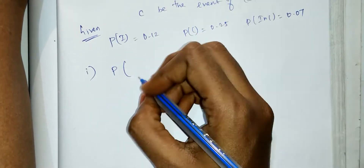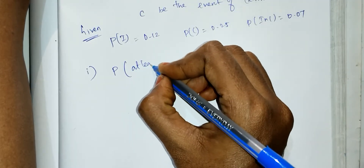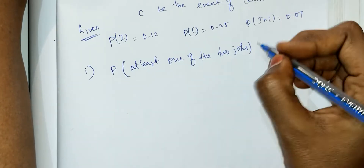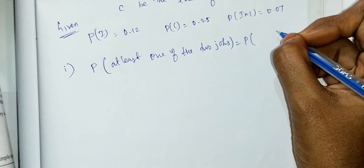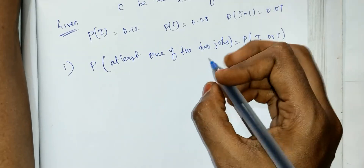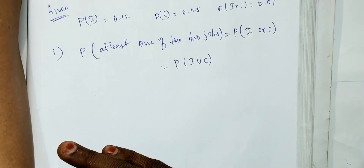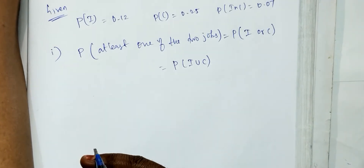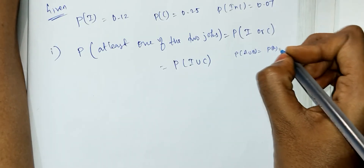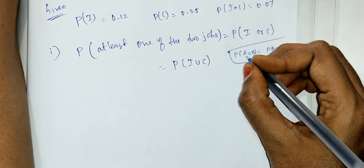The probability of at least one of the two jobs — at least one means we use union. The formula is: P(A union B) = P(A) + P(B) - P(A intersection B). So here, P(A union C) = P(A) + P(C) - P(A intersection C).